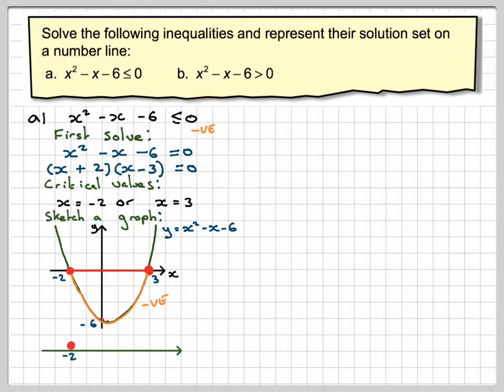So on a number line, draw solid dots and a line in between minus 2 and 3, and the answer is x is greater than or equal to minus 2 and x is less than or equal to 3.